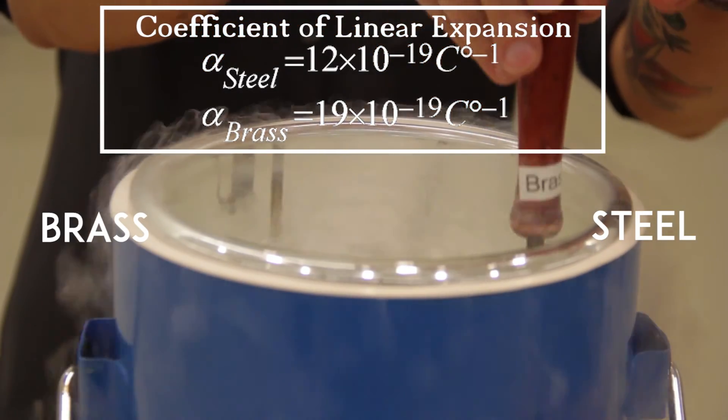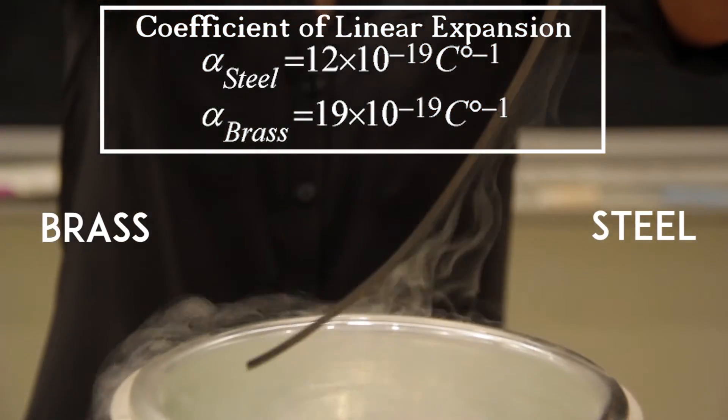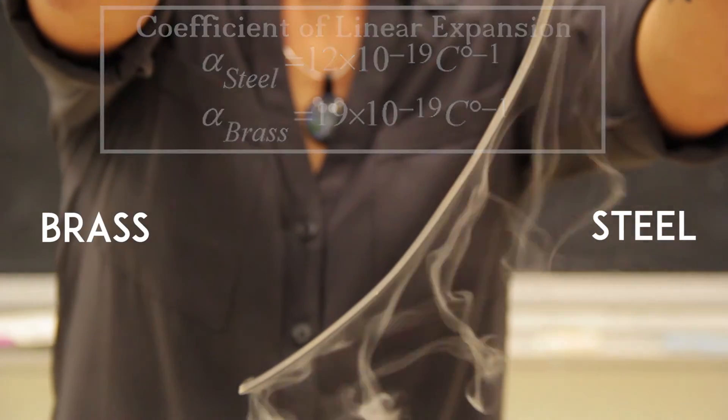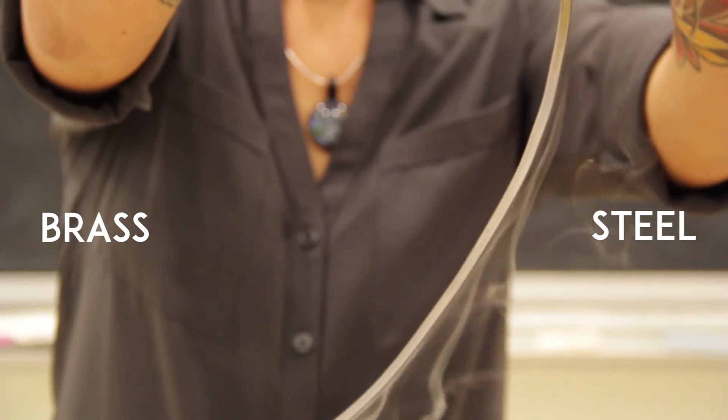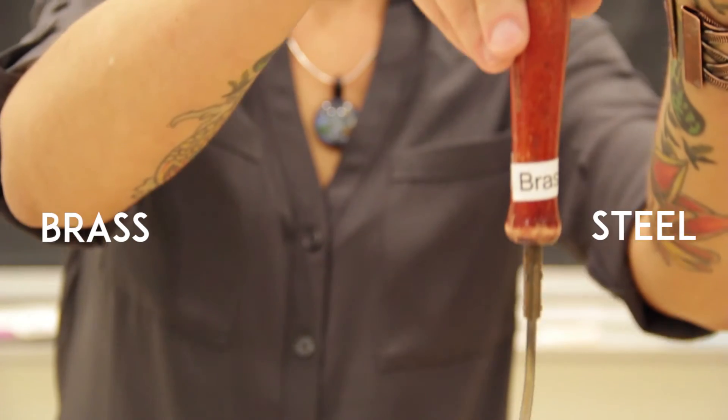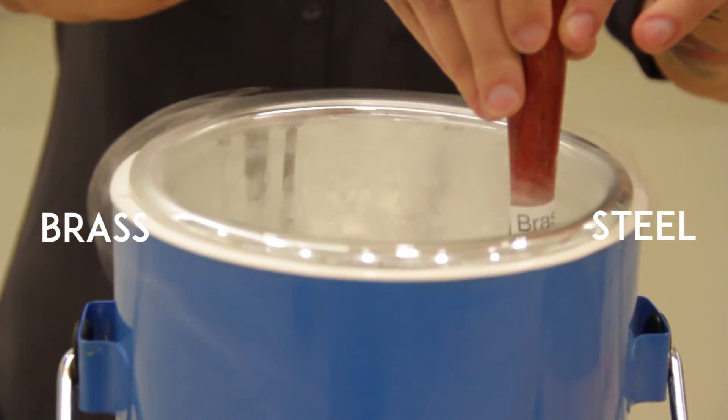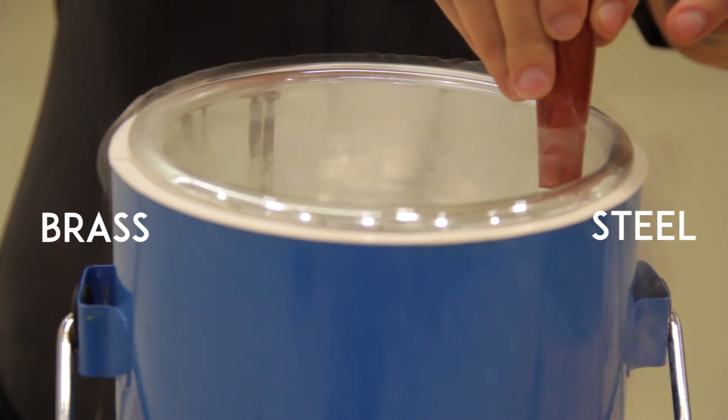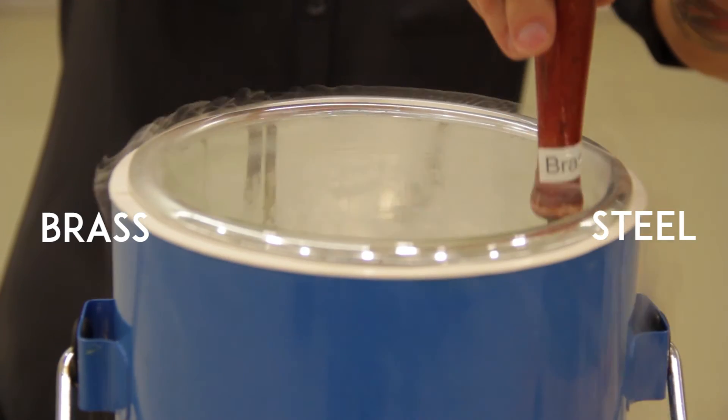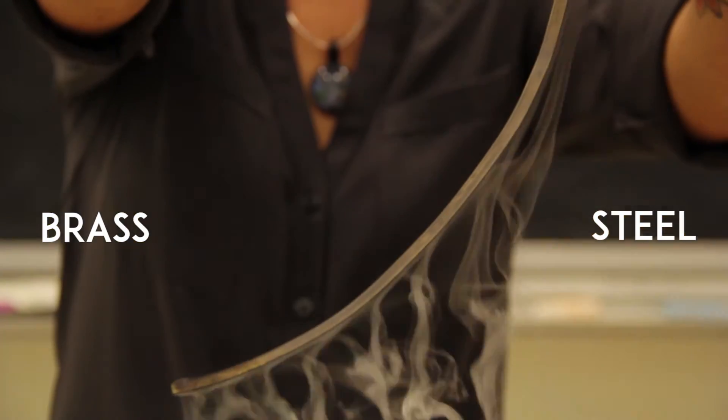Picture the bi-metallic strip in a primitive furnace control system, establishing an electrical connection that turns the furnace on when the metal strip curves one way and completes an electrical circuit when cold, and curves the other way, disconnecting power to the furnace when hot.